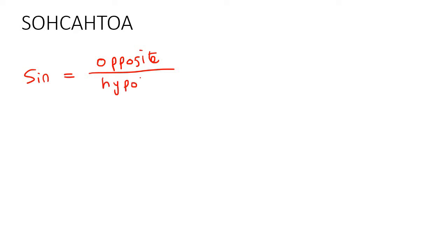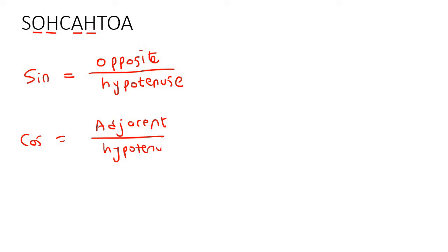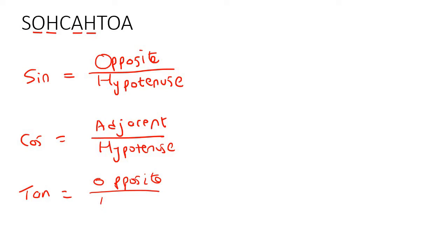So what it means is that sin is equal to opposite over hypotenuse — you might not even know what that means, but I'm going to explain it soon. Cos is equal to adjacent over hypotenuse. And then tan is going to be opposite over adjacent. So right now this might not make sense, but that's okay. I just want you to have that written down on a piece of paper for now.